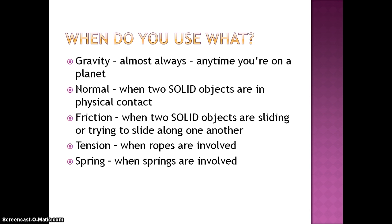Friction exists when those two solid objects that are in physical contact are sliding or trying to slide along one another. Friction cannot exist without the normal force. Tension is used anytime ropes are involved, and spring is used anytime springs are involved.